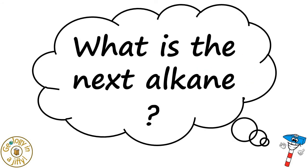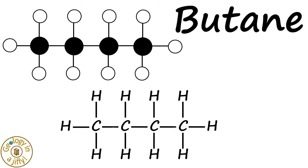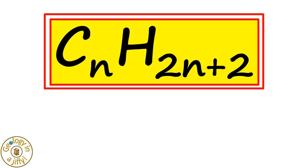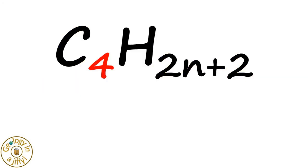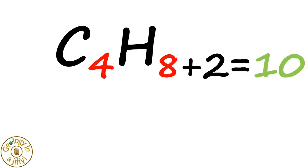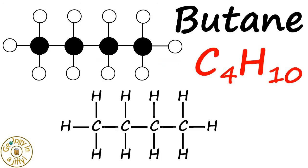What is the next alkane? Butane is the next alkane, as shown by these models. We can see there are four carbon atoms, so using our formula, if there are four carbon atoms, two times four makes eight hydrogen atoms, plus the two hydrogen atoms at the ends, makes a total of ten hydrogen atoms, giving us the formula for butane as C4H10.